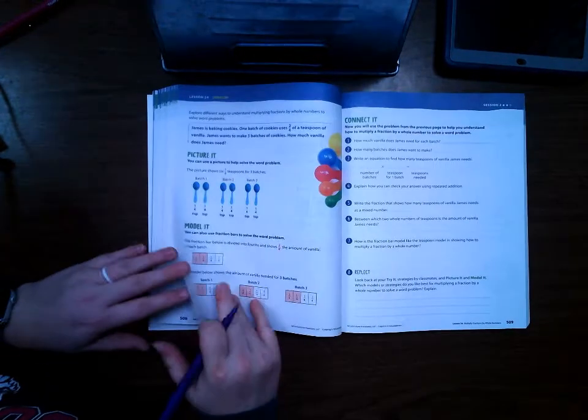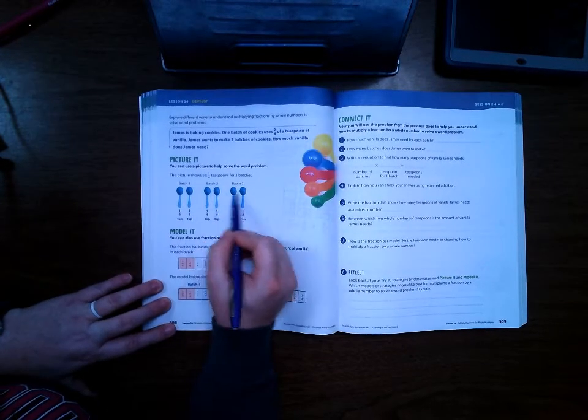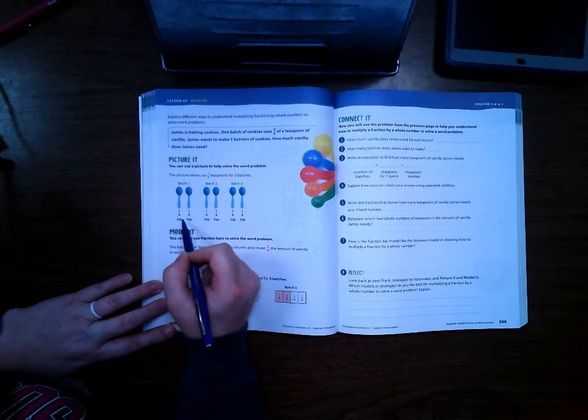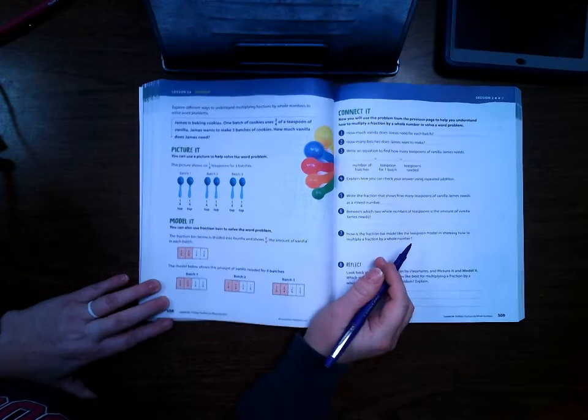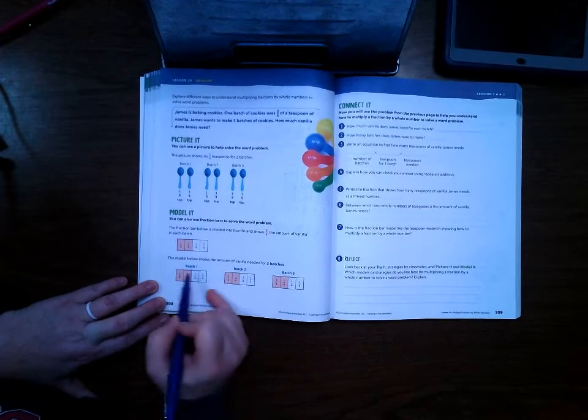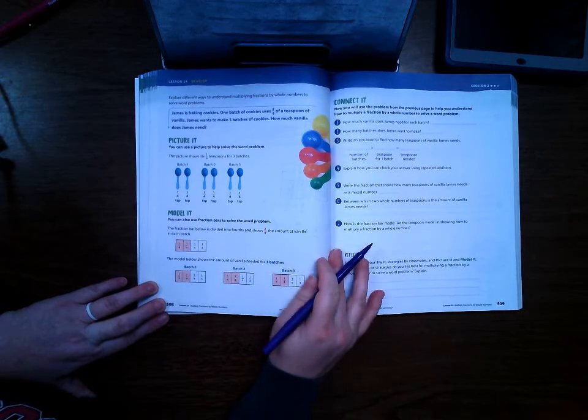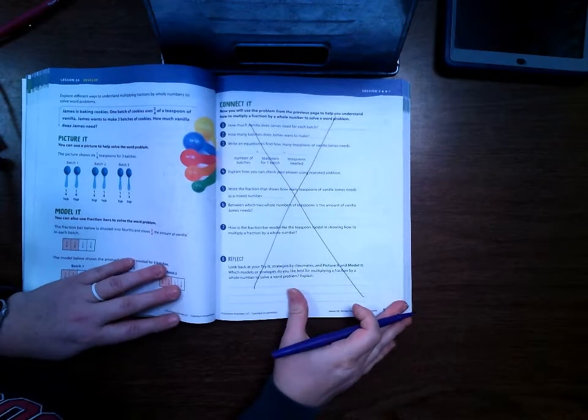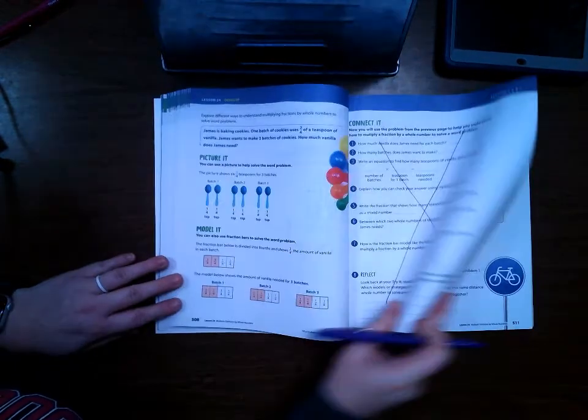Go ahead and turn to page 508. Right here they used a picture of actual spoons, but this is pretty much the same thing as what we did, just that they're using pictures. Down here they used bar models, just like how we used bar models. Over here on 509 we're actually going to skip it because it's just repeating all the things that we just talked about. So go ahead and go to page 510.